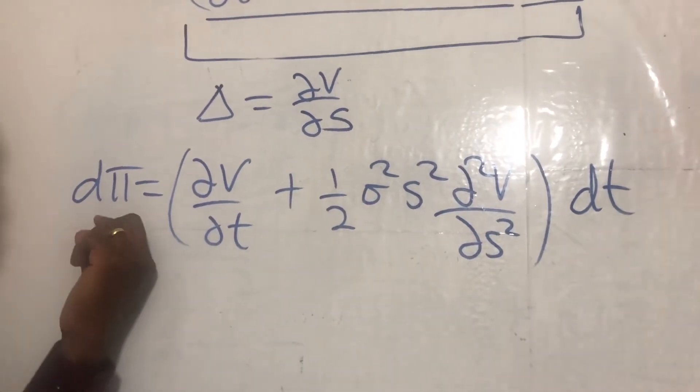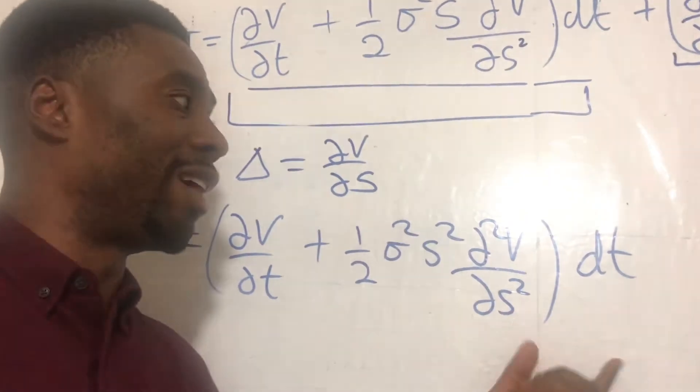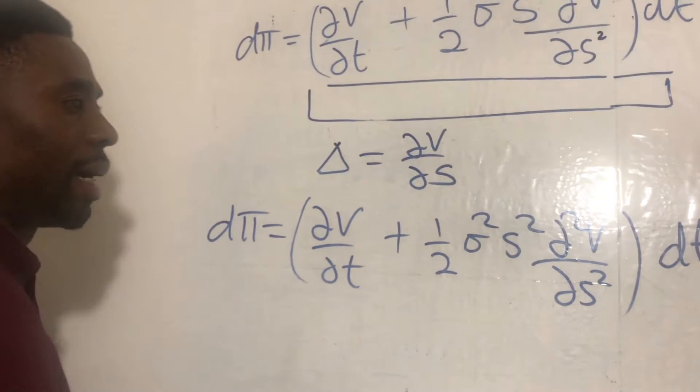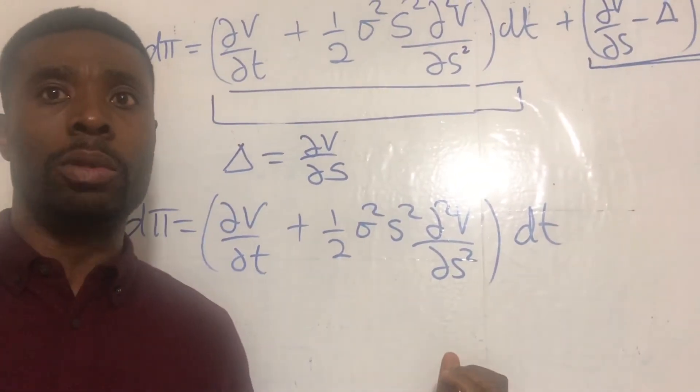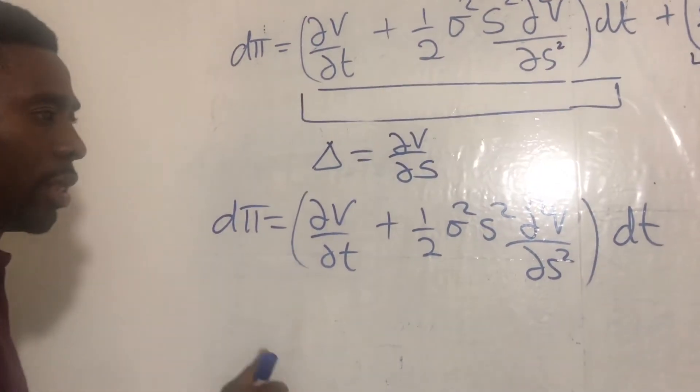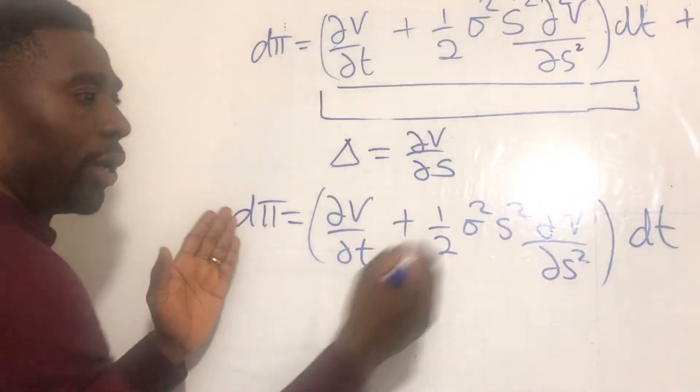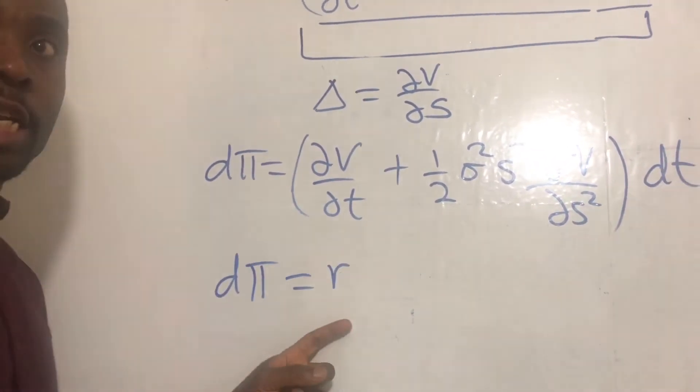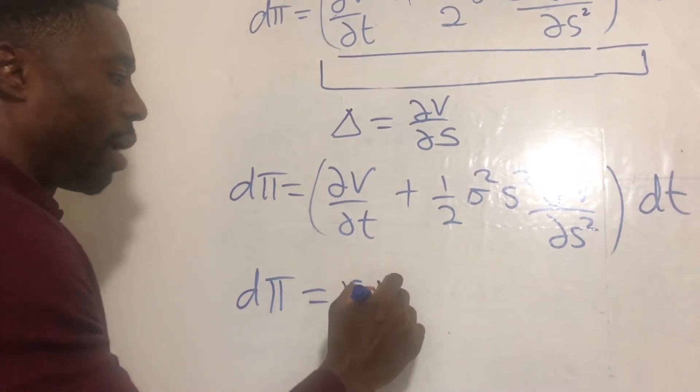This clearly shows that the change in the portfolio value is riskless. There's no stochastic element here. So therefore, this is risk-free. And as a result of that, if we had cash and we put the cash into a riskless account, then we would expect that the change in the cash should be equal to, say for example, if you have π as a cash amount and you put it into a bank account, then you expect dπ to be equal to r, which is the interest rate of the bank account that you get, the risk-free rate, times by π dt.